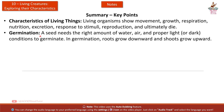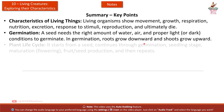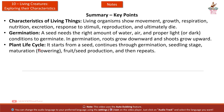Germination: a seed needs the right amount of water, air, and proper light or dark conditions to germinate. In germination, roots grow downward and shoots grow upward. Plant life cycle: it starts from a seed, continues through germination, seedling stage, maturation, flowering, fruit and seed production, and then repeats.